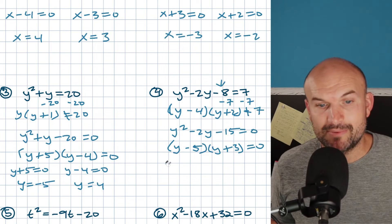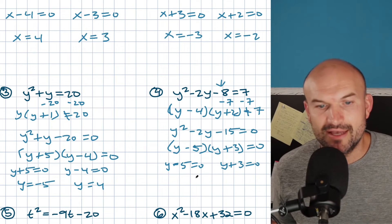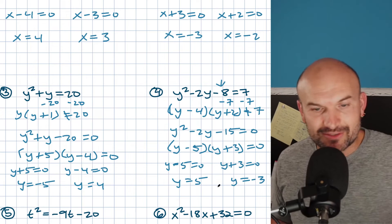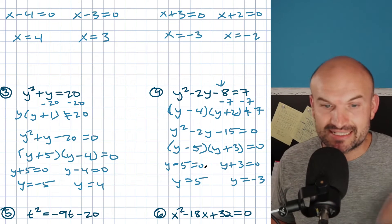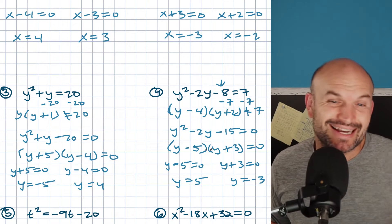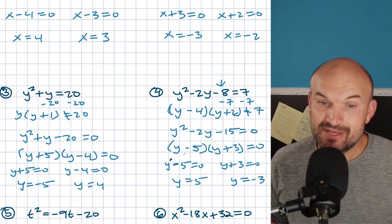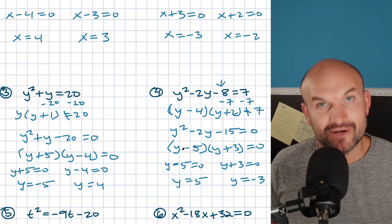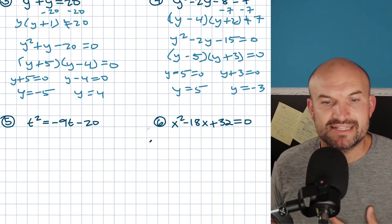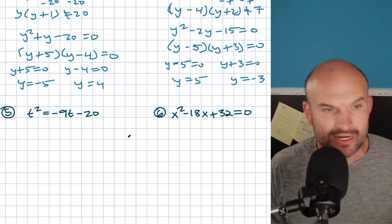Applying the zero product property: y minus 5 equals zero and y plus 3 equals zero. I like to write this out because if I make a mistake, I can pinpoint exactly where. Also, students often make the mistake of saying y is negative 5 and y is 3 — no, no, no. You've got to set each factor equal to zero and then solve. And as we get into more complicated problems, that's a very important skill to stay correct on.